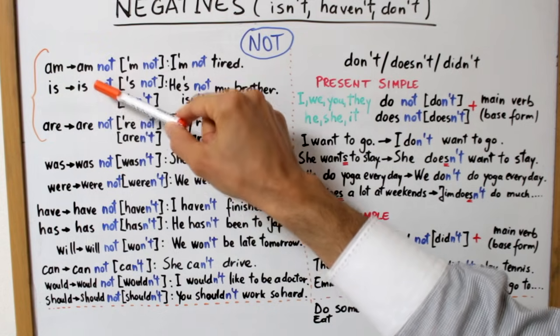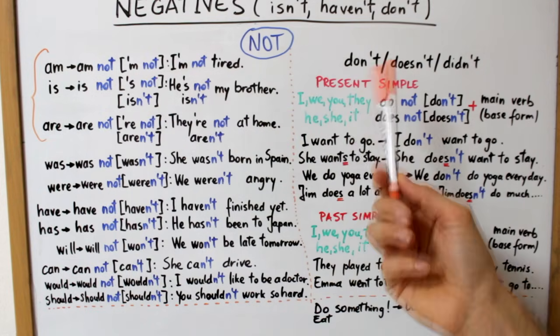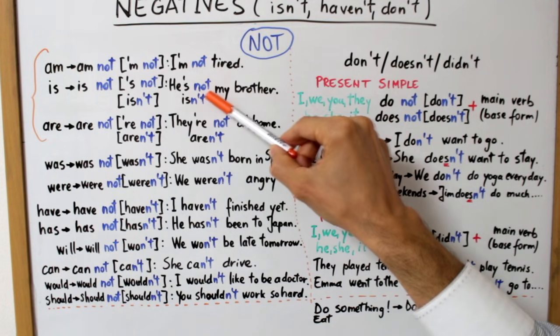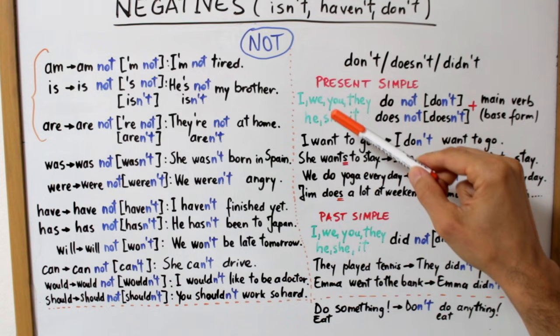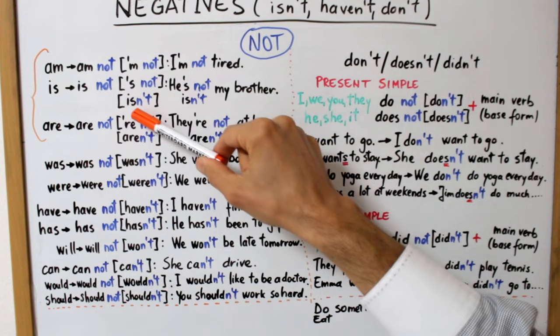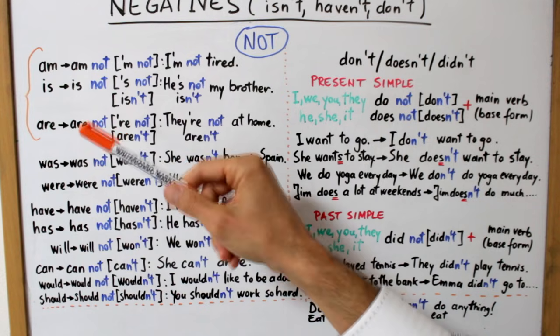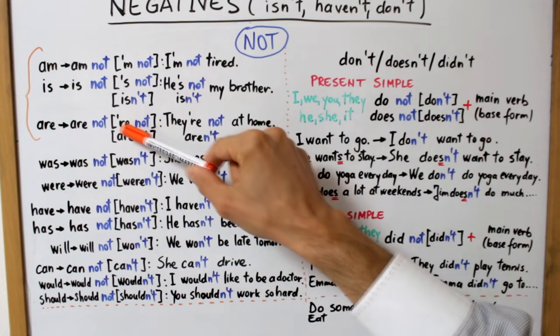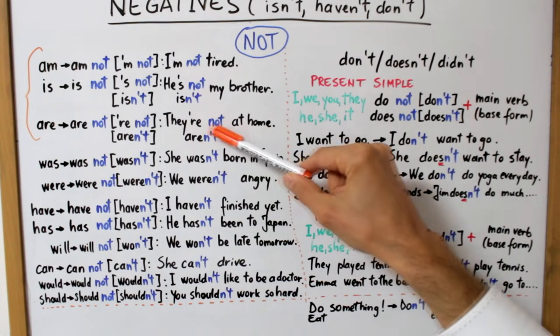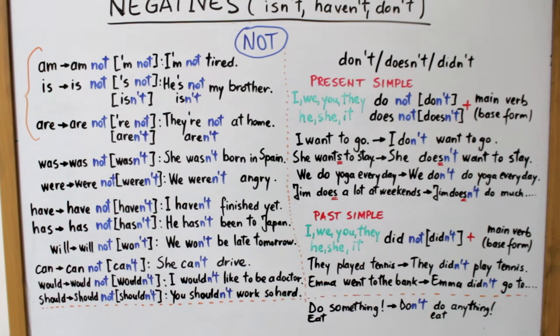La fel se întâmplă și în cazul lui IS. Negația este IS NOT cu formele scurte Z NOT sau ISN'T. De exemplu, în propoziția El nu este fratele meu sau El nu-i fratele meu cu formele scurte He is not my brother respectiv He isn't my brother. Observăm că în cazul acestei contracții ISN'T a dispărut vocala O și a fost înlocuită cu un apostrof. La fel și forma ARE. La negativ devine ARE NOT cu formele scurte R NOT respectiv AREN'T. Ca în exemplu Ei nu sunt acasă They are not at home. Ei nu-s acasă sau They aren't at home.